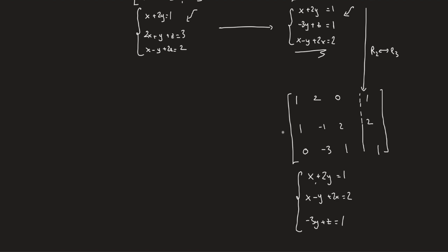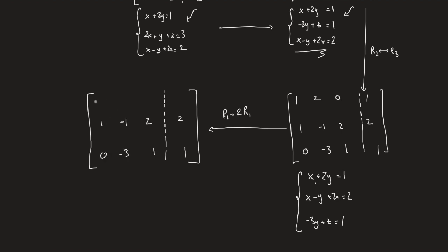Last but not least, let's do one more operation: instead of row one, put two times row one — scaling or multiplying the first equation by two. Rows two and three remain intact, and row one is multiplied by two: 1 becomes 2, 2 becomes 4, 0 remains 0, and 1 becomes 2. The system right here becomes 2x plus 4y equal to 2, and the second and third equations are the same.